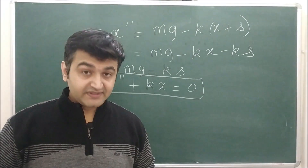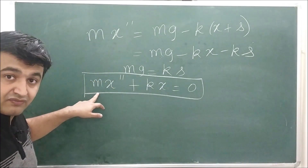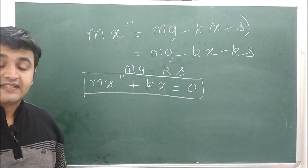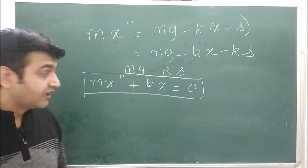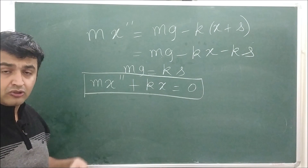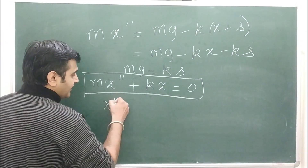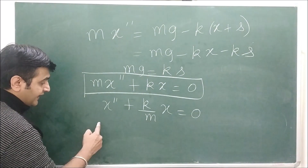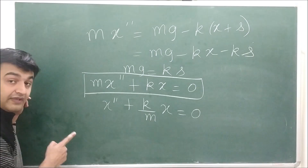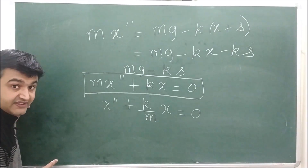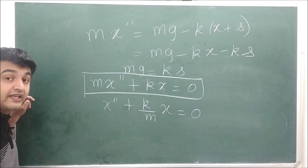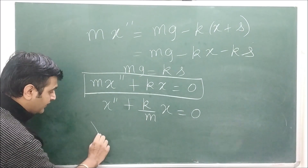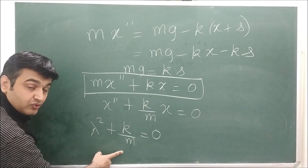The equation is m·x'' + kx = 0, or equivalently x'' + (k/m)x = 0. We know how to solve this second order linear ODE with constant coefficients. The auxiliary equation is λ² + k/m = 0. To simplify, we introduce the notation ω² = k/m, so the auxiliary equation becomes λ² + ω² = 0.